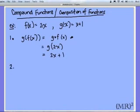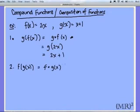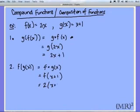If I give f of g — which is the same as writing f with a little open circle of g — then f of g of x: g of x is defined as x plus 1, and f is 2 times whatever the input is. So if the input is x plus 1, I have 2 times that input, which gives me 2x plus 2.